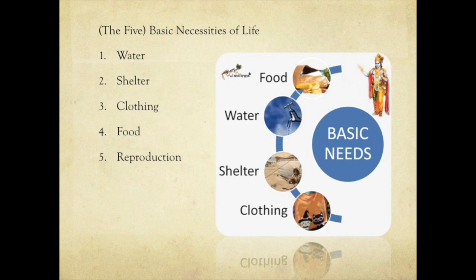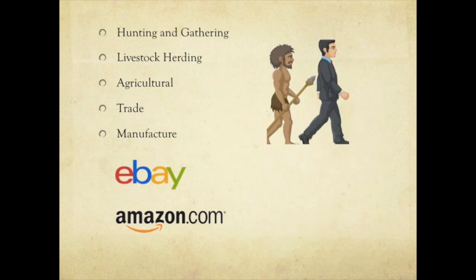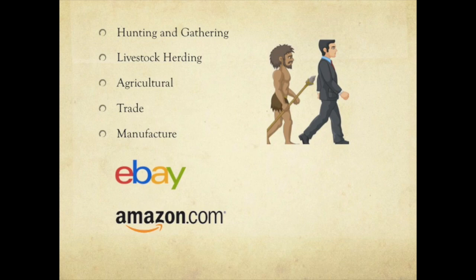Hunting and gathering as methods are pretty much not used in the United States today by the majority. In third-world countries around the world, they are still used. Livestock herding — in the United States we have dedicated dairy farms and livestock farms, so we don't have to worry about that. But in other countries they still do that, and in colonial America you had to move livestock from pasture to pasture, field to field.